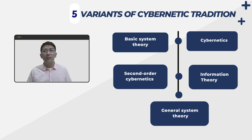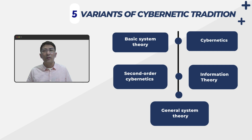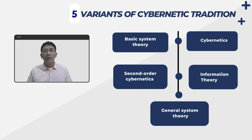The cybernetics variant emphasizes how cybernetics is about a process with feedback loops which can create change. The third is information theory, which looks primarily at the transmission of signals from one part of a system to another through networks.